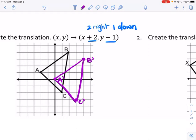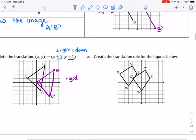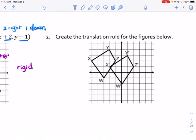Remember, it looks exactly the same. If your shape does not look exactly the same at the end, you did the translation incorrectly. Remember that a translation is a type of rigid transformation. Rigid just means that it doesn't change its size or shape at all. We're going to go over here to create the translation rule for the figures below. We get to do it backwards now.